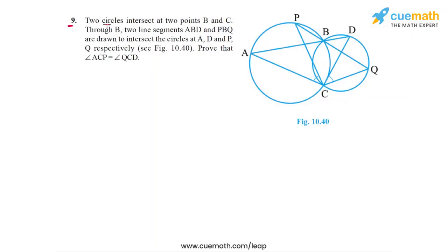Question 9 says that two circles intersect at two points B and C. Looking at this figure, we have two circles which intersect at points B and C. Through B, two line segments ABD and PBQ are drawn to intersect the circles at A, D, P, and Q respectively. Let's highlight these two line segments: ABD is drawn through B, and similarly PBQ is also drawn through B.